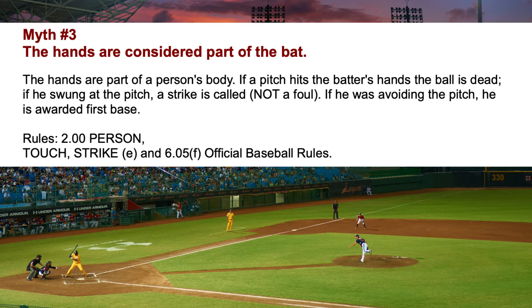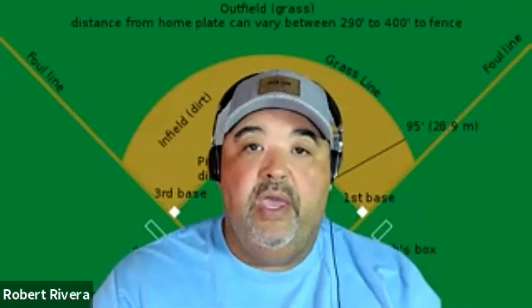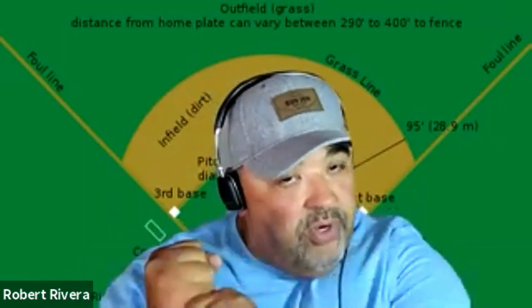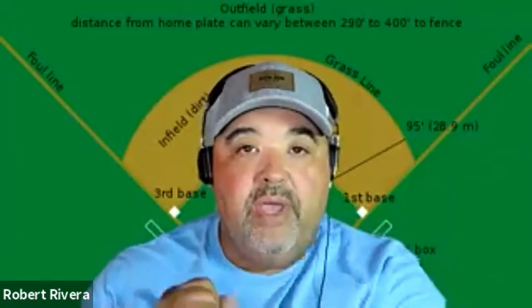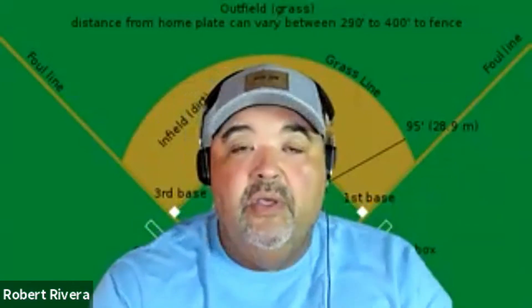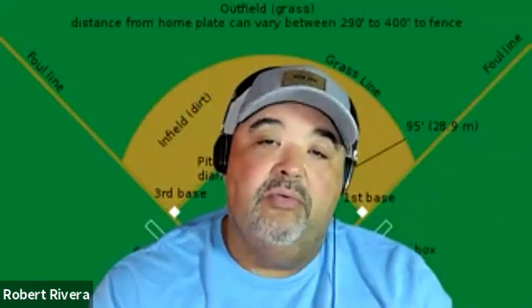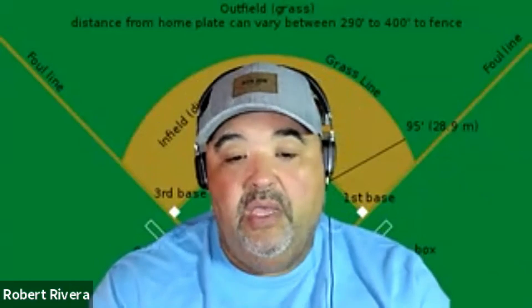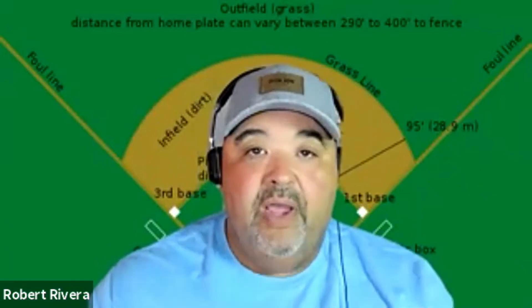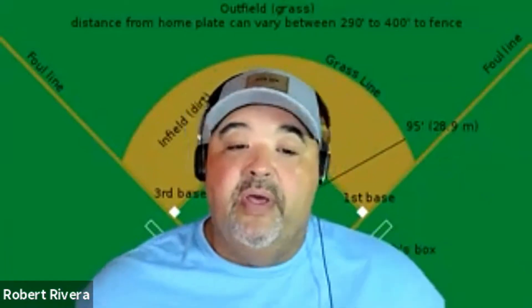The hands are part of the person's body. If the pitch hits the batter's hands, the ball is dead. If he swings at the pitch, a strike is called — not a foul. If he was avoiding the pitch, he is awarded first base. So if he's swinging at the ball and it hits him in the hand, that's a strike. But if he's not swinging and moves forward and gets hit in the hand, it's a hit batter. It does happen — the hands are not part of the bat.